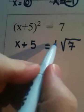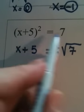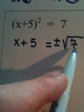And remember what else it tells us. We also have to put a plus or minus in front. So by applying the square root property, I have x plus 5 equals plus or minus the square root of 7.